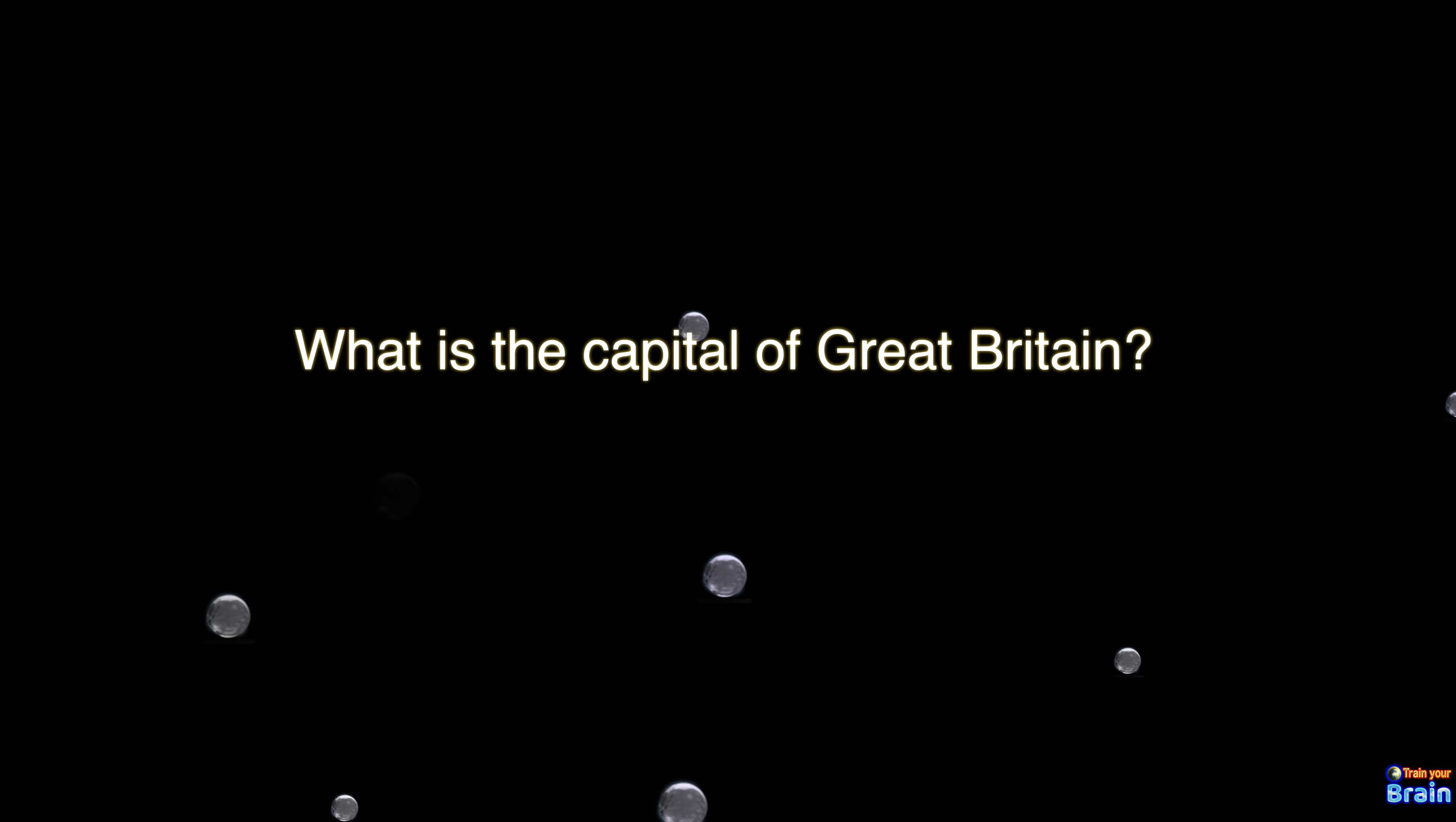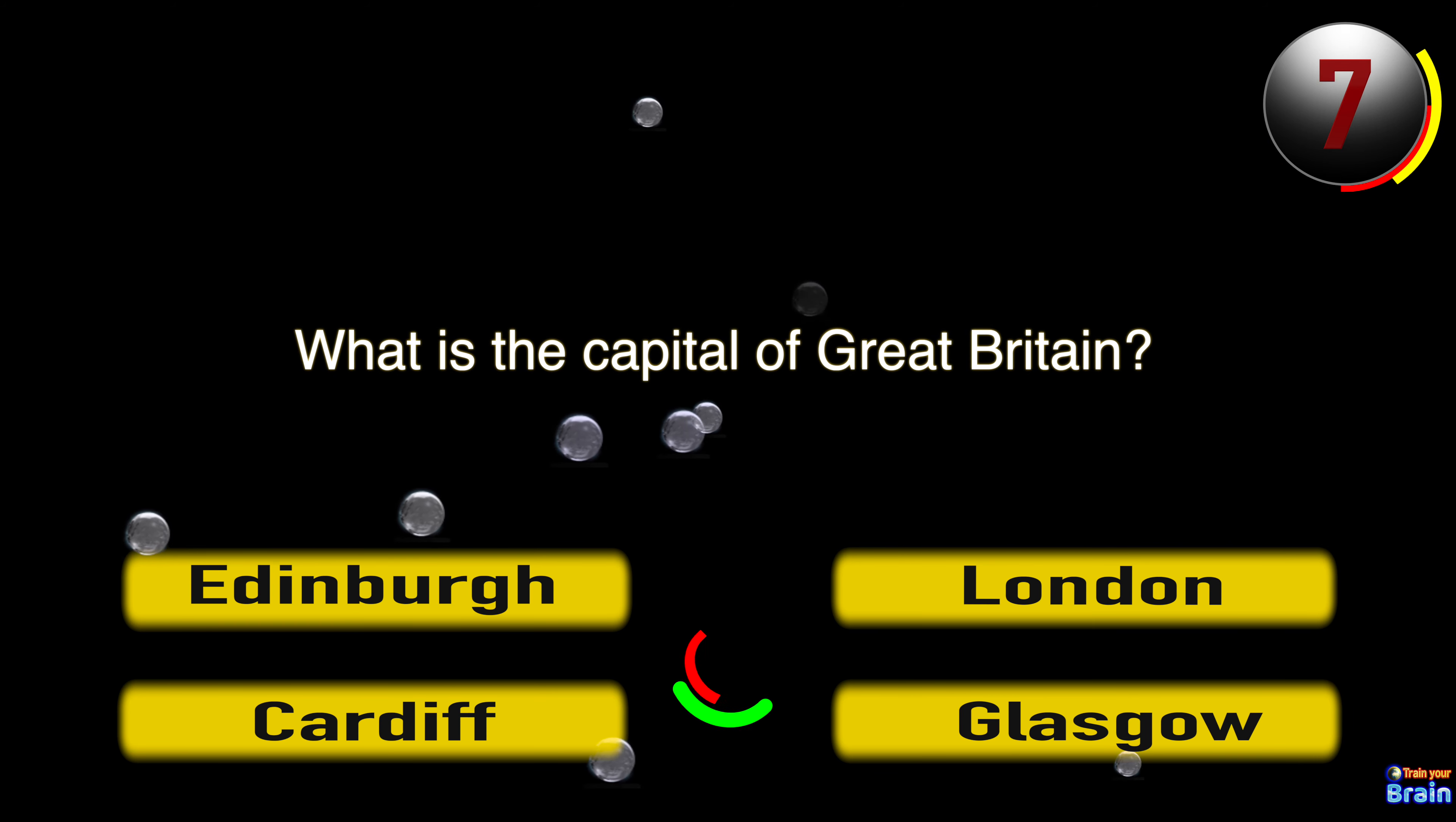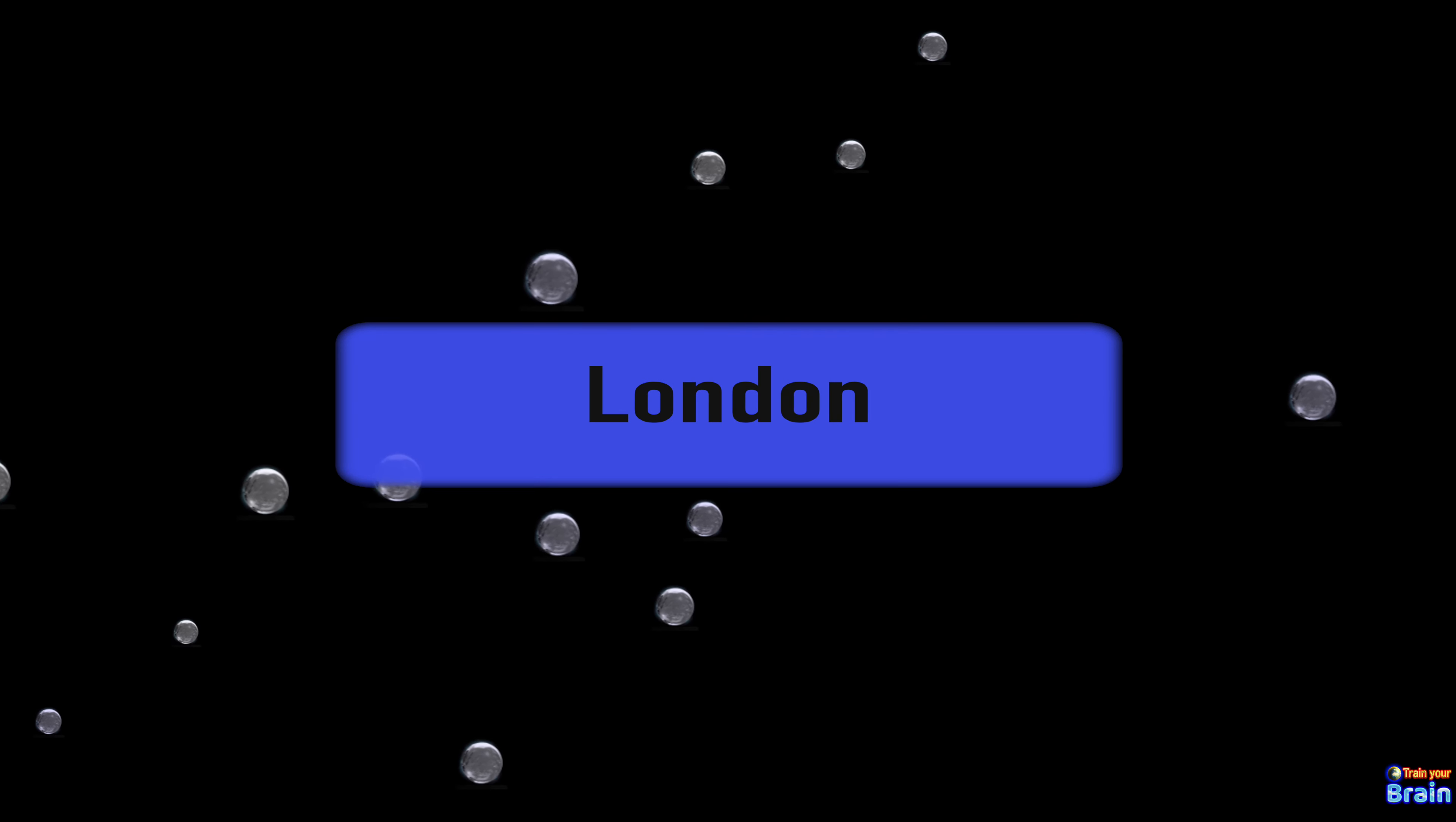What is the capital of Great Britain? Edinburgh, London, Cardiff, Glasgow. And this is London.